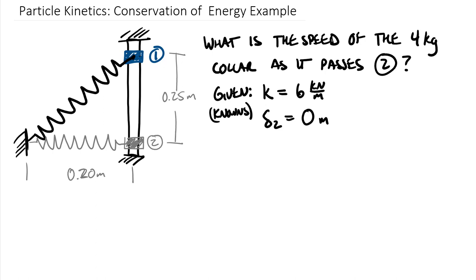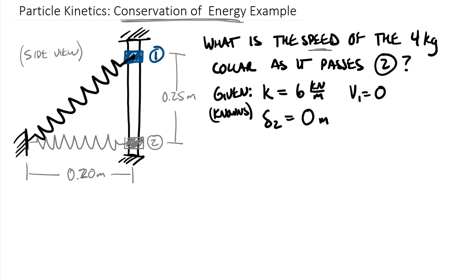This problem is a conservation of energy problem for a couple of reasons. One is that we have a spring, so we have some energy possibly going into that spring at either the initial or final position. Two is that we're looking at a speed, so we're exchanging energy among speed, a spring, and a vertical height — this is a side view. One more piece of information: the initial velocity equals zero, meaning it is initially at rest.